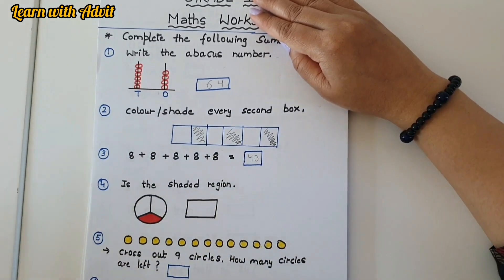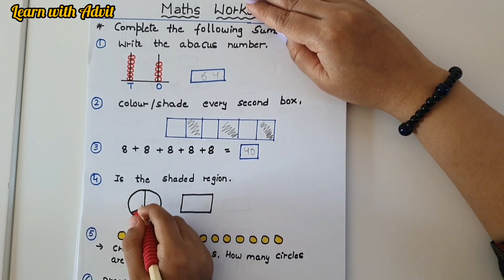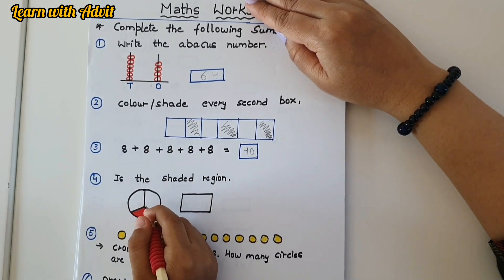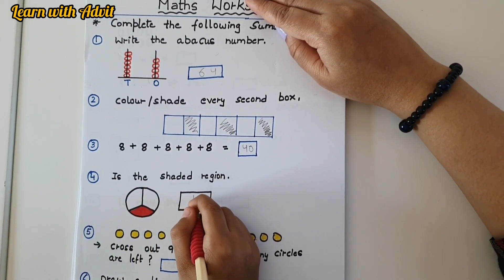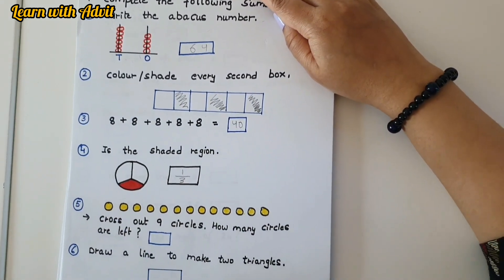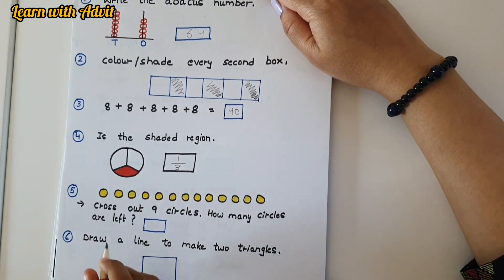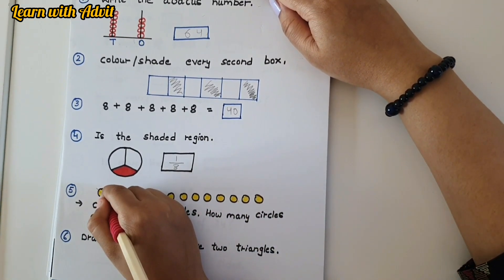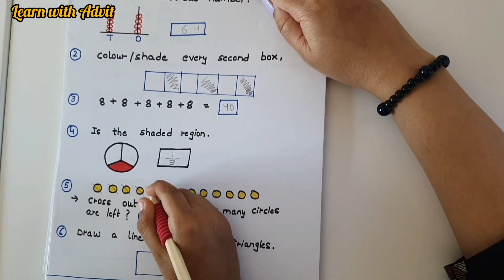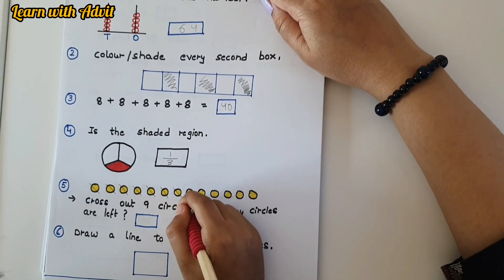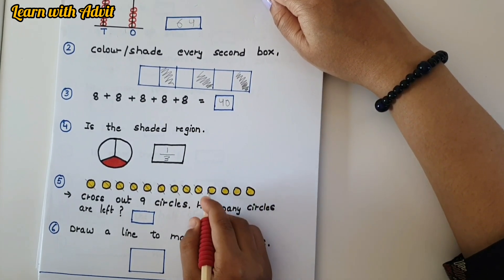Is the shaded region a fraction? Yes, you have to write it. This circle is divided into three equal parts, so write the fraction — it's one third. Very good! Now here are some circles. You have to cross out nine circles. Cross them out: 1, 2, 3, 4, 5, 6, 7, 8, 9. How many are left? Four are left.